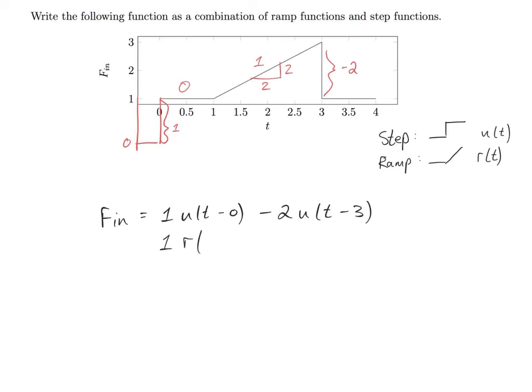Again, the ramp takes place at time one. That is the ramp that explains the slope change going from zero to one. And our second ramp explains the slope change going from one back to zero, meaning a change of minus one. And that happens at time three.